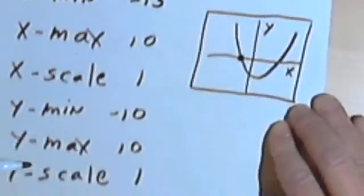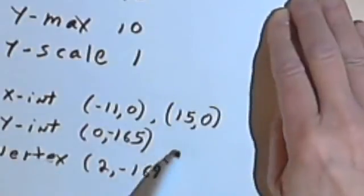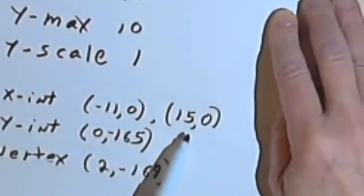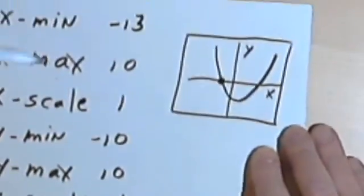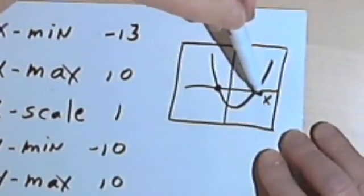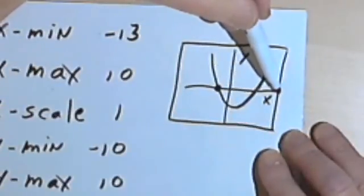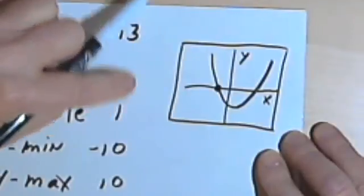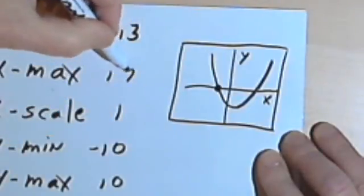For the x-maximum, my other x-intercept was at 15, so I want to make sure that my graph goes at least out to 15, probably a little bit more. So I'm gonna set my x-maximum, let's make that 17.